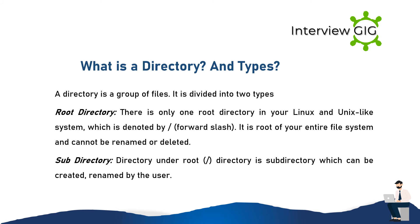What is a directory? A directory is a group of files. It is divided into two types. Root directory: there is only one root directory in your Linux and Unix-like system, denoted by a forward slash. It is the root of your entire file system and cannot be renamed or deleted. Sub-directory: a directory under the root — slash directories are subdirectories, which can be created and renamed by the user.